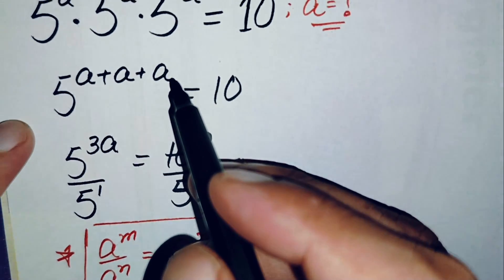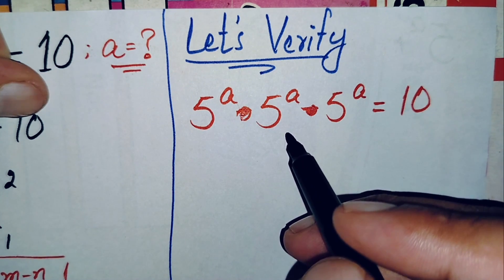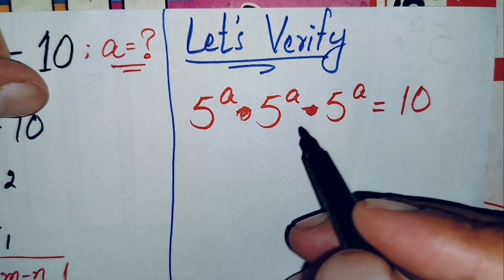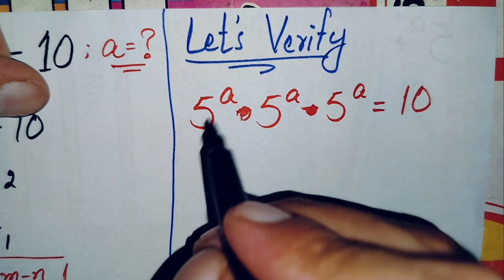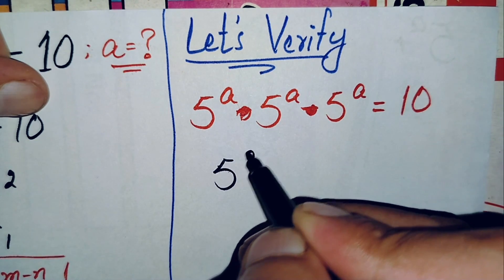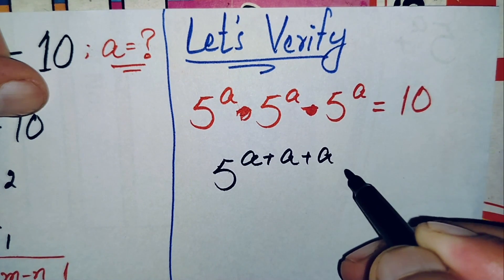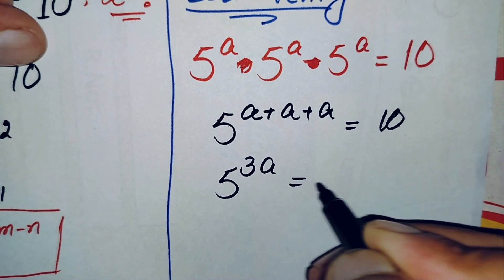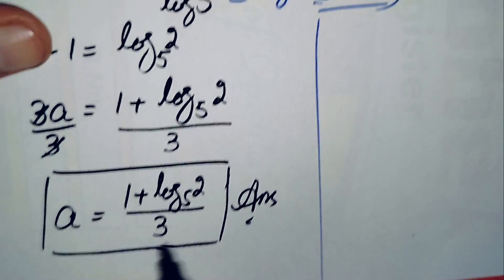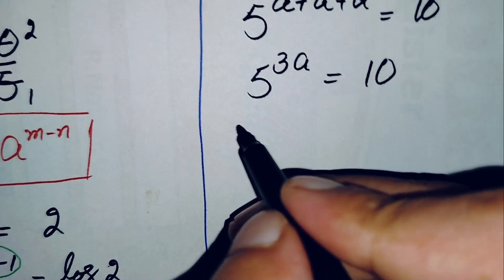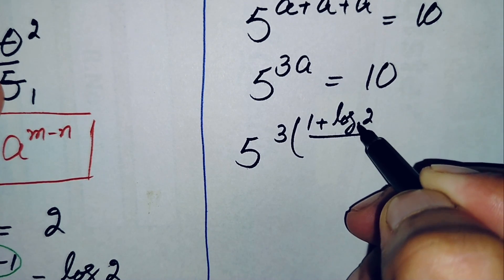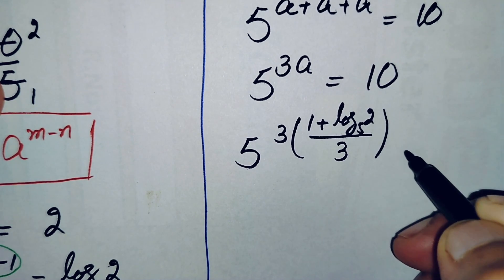Now let's verify that a equals (1 + log₅2)/3 is the correct value. We rewrite the original problem: 5^a times 5^a times 5^a equals 10. Since the bases are the same, we add the powers to get 5^(3a) equals 10. Substituting the value of a, we get 5 raised to power 3 times (1 + log₅2)/3, equals 10.